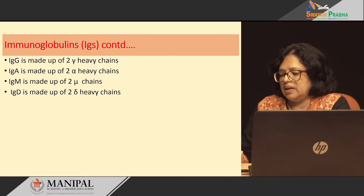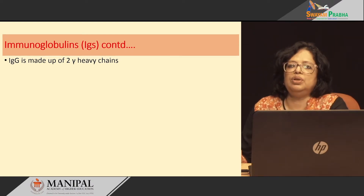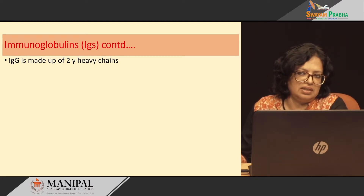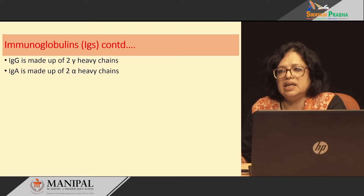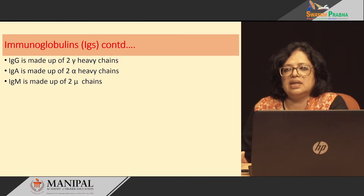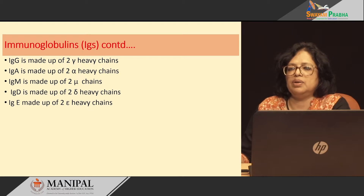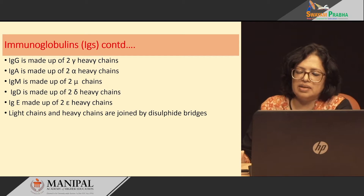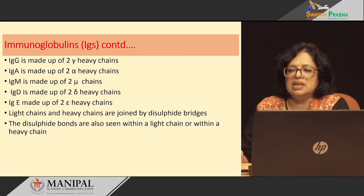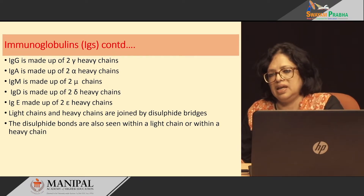The five immunoglobulin types are: IgG made up of two gamma heavy chains, IgA made up of two alpha heavy chains, IgM made up of two mu heavy chains, IgD made up of two delta heavy chains, and IgE made up of two epsilon heavy chains. The light chains and heavy chains are joined by disulfide bridges, and disulfide bonds are also seen within the light chain and within a heavy chain.